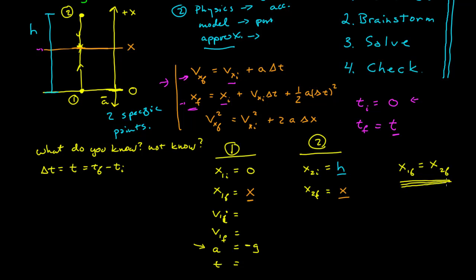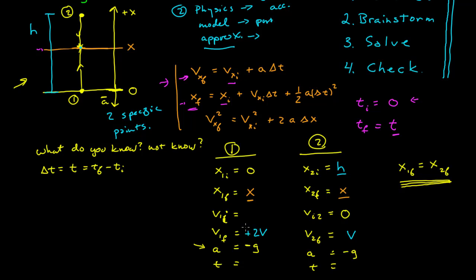Do I know the initial velocity of particle 2? I do, because it was dropped from rest — so its initial velocity is 0. I don't know its final velocity, but I know it's half the speed of particle 1. Its acceleration is also negative g. I'm going to call the speed of particle 2 at collision v, so the final speed of particle 1 is 2v. Since velocity is a vector, I go back to the diagram: when they collide, particle 1 is still moving up so its velocity is positive 2v, and particle 2 is moving down so its velocity is negative v.